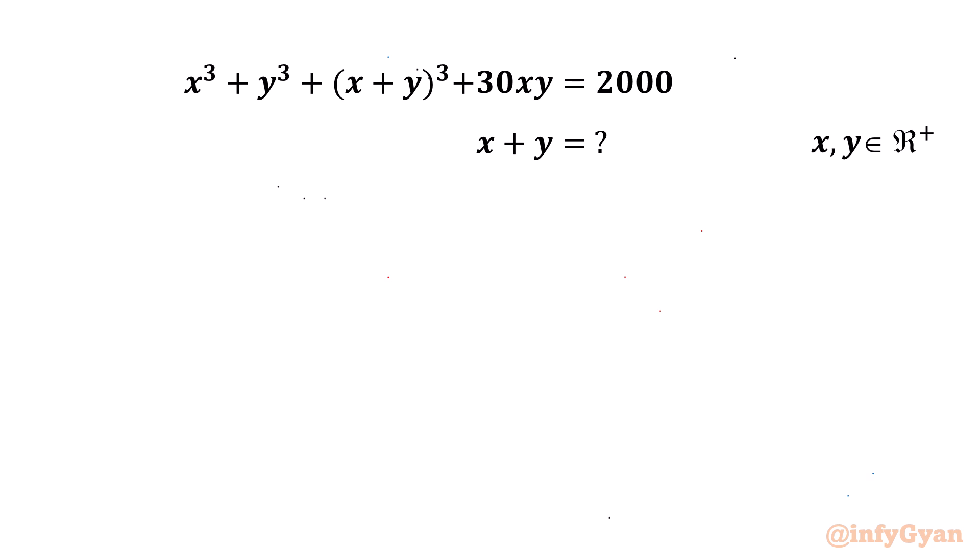Hello everyone, welcome back to Infigyan. In this video we are going to take up one very interesting question from Math Olympiads. Here x and y belong to real positive numbers. The given equation is x³ + y³ + (x + y)³ + 30xy = 2000. We need to find the value of x + y.